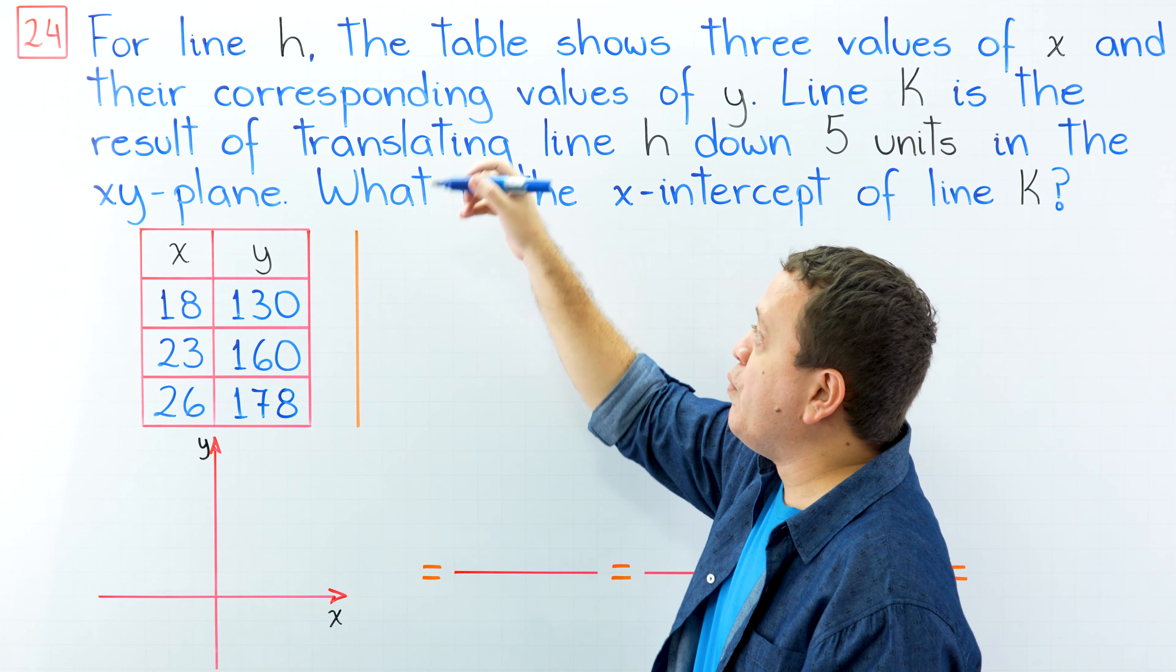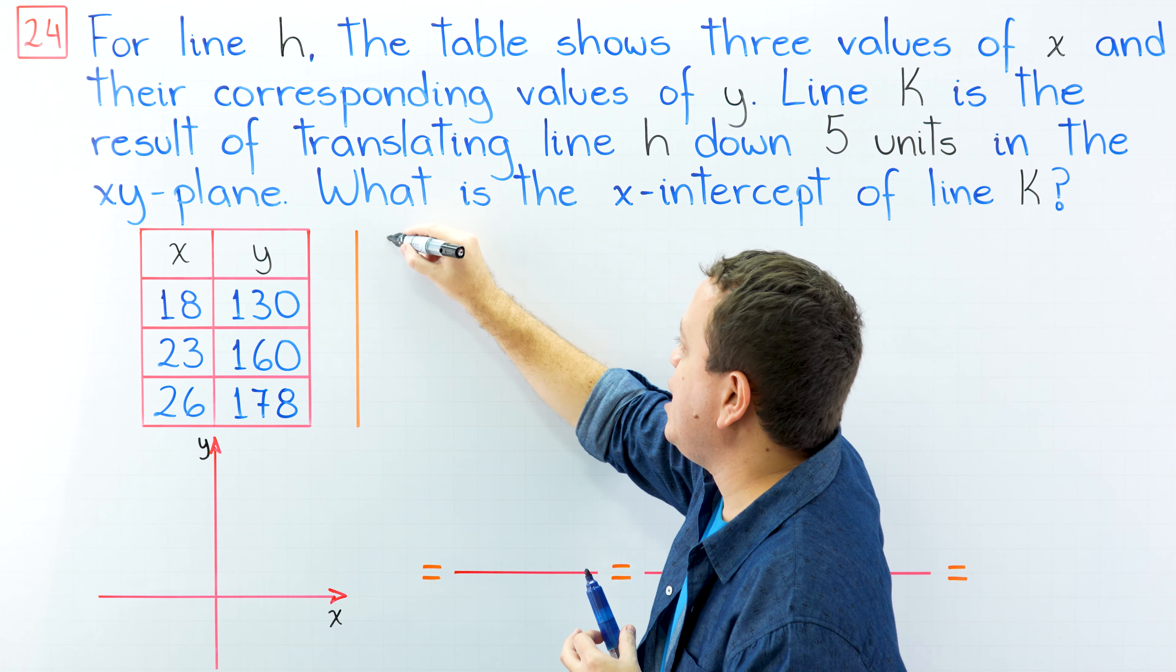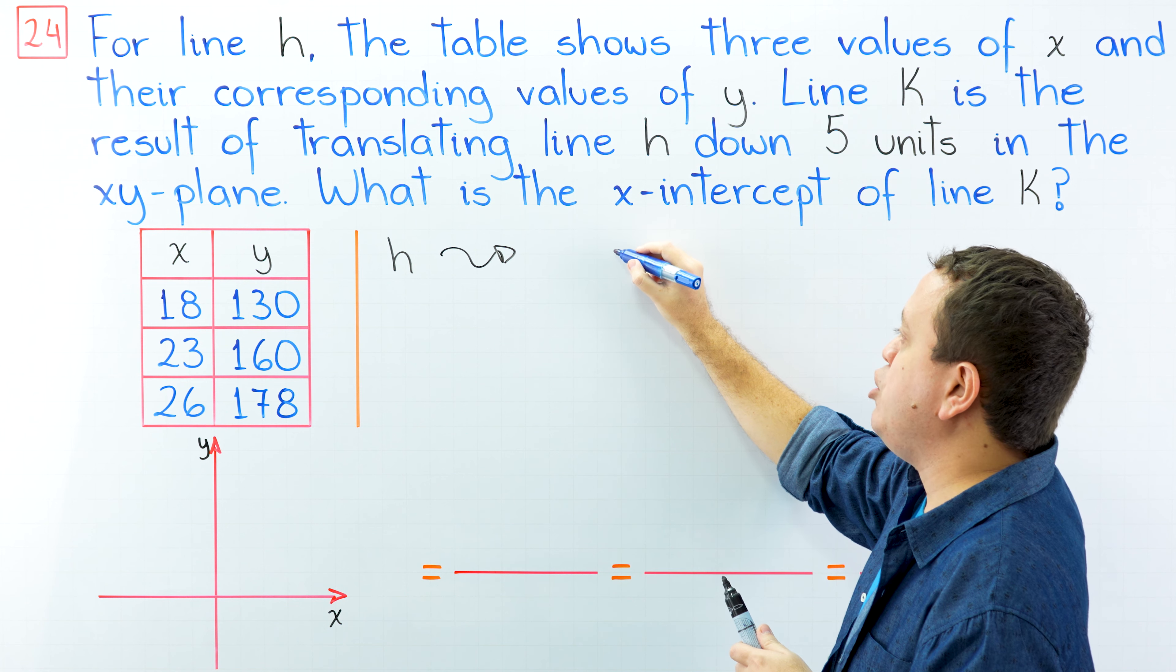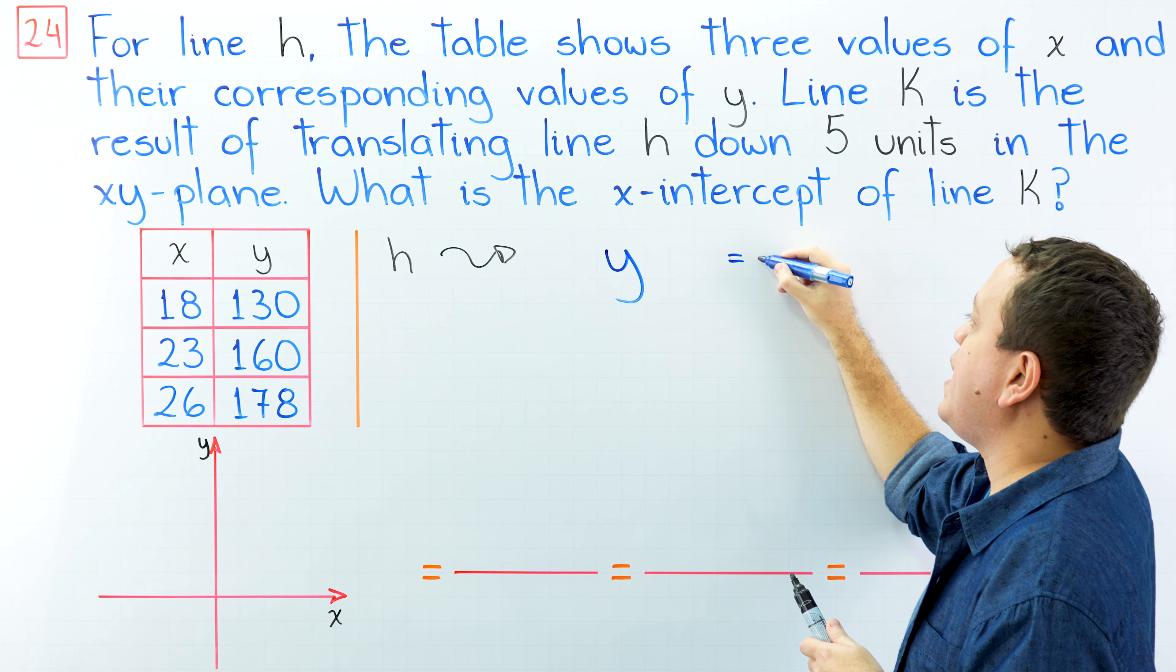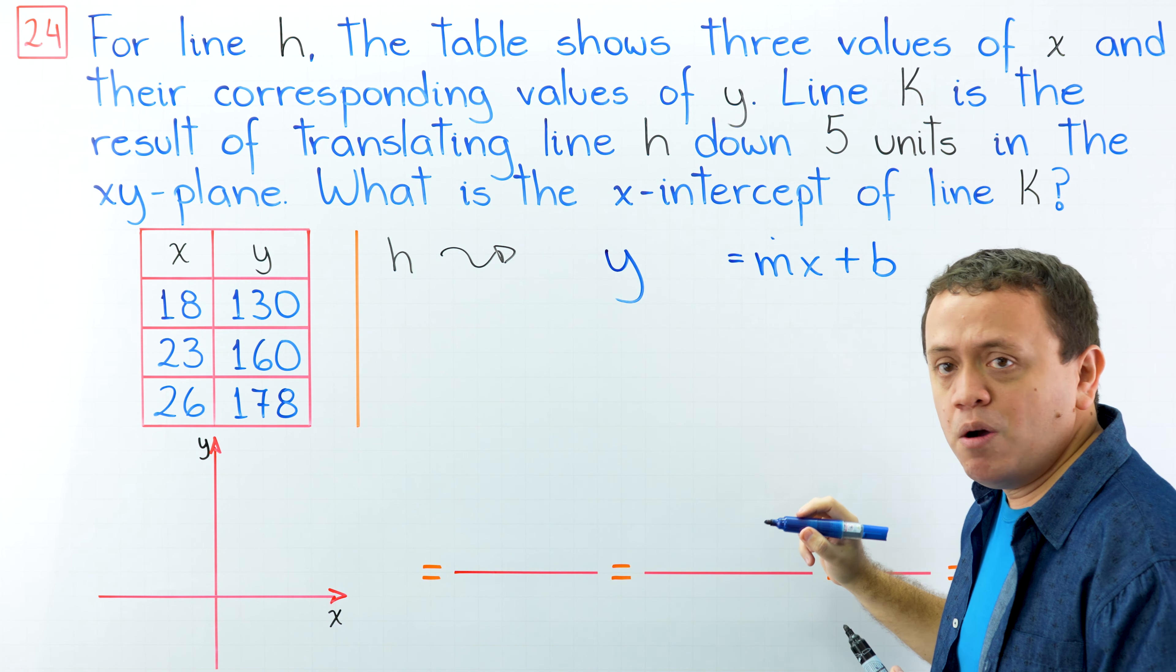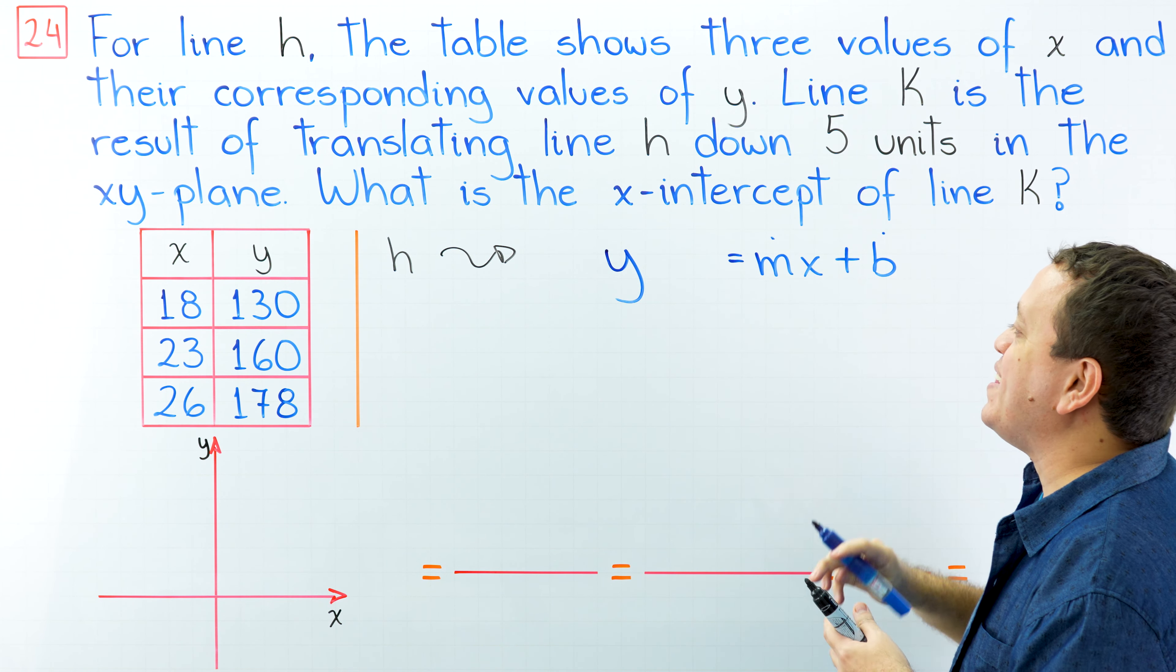This table shows some points of line h. Given that h is a line, we can use this form of the linear equation y equals mx plus b, where m is the slope and b is the y-coordinate at the y-intercept.